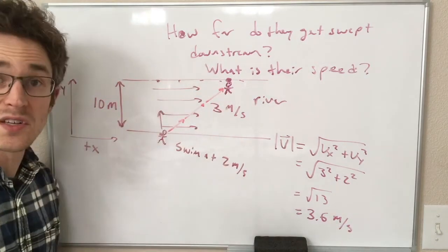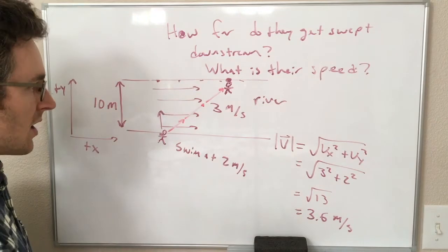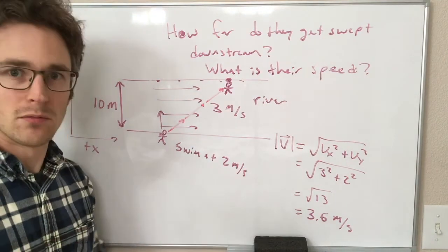So they're moving at 3.6 meters per second, so that's 2 in this direction and 3 in this direction. It is not 2 plus 3 is 5 because they're in different directions.